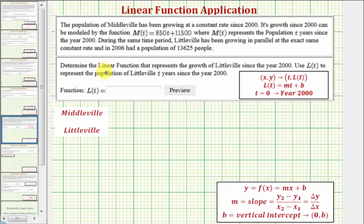The first question: we want to determine the linear function that represents the growth of Littleville since the year 2000, and we want to use L(t) to represent the population t years since the year 2000. Let's begin by looking at all the given information. We first know that growth of Middleville can be modeled using this linear function in slope-intercept form, so notice how m, the slope, equals 850, which means the constant growth rate is 850 people per year. So for Middleville, we know the slope m = 850.